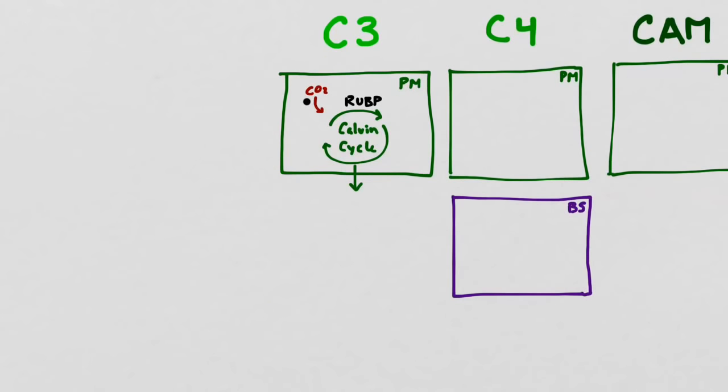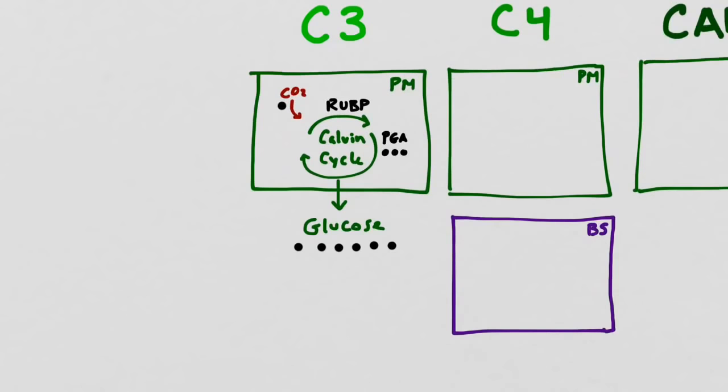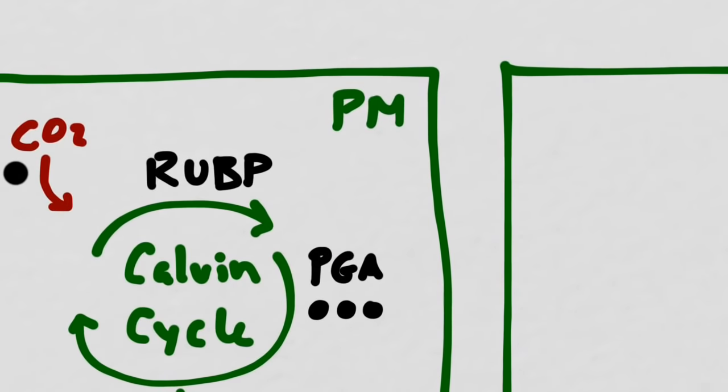In the C3 plant that we're familiar with, carbon dioxide combines with RUBP. Then it forms a three-carbon intermediate called PGA, which is why this is called the C3 pathway. Ultimately, it forms a six-carbon molecule called glucose, and then that gets carried around the plant by the phloem. Notice that this all takes place in the palisade mesophyll cells.